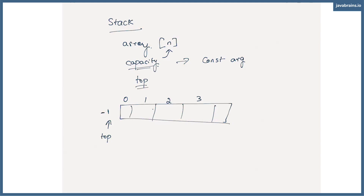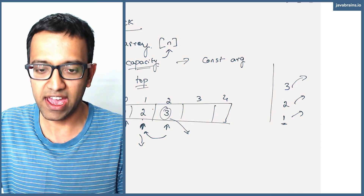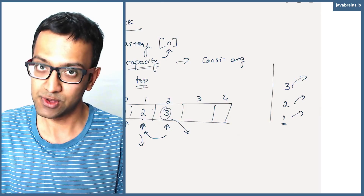We also need a pointer — let's call it 'top' — which points to the top of the stack, initialized at minus one. When you push something to the stack it goes to the bottom, then the next push goes on top, and so on. When you pop, the last item goes out first. Using an array: the first push of one sits at index zero and top moves to zero; push two, top moves to one; push three, top moves to two. When you pop, you take the item out, return it, then move top back one position. It's a simple translation from array methods to stack methods, just making things more restrictive in where elements get added and removed.